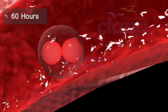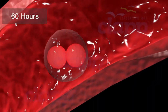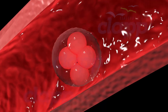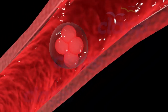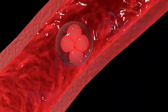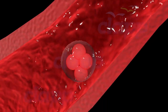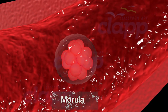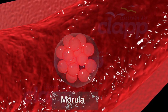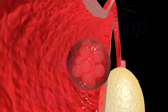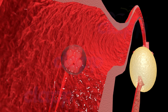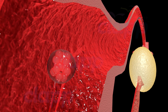Second cleavage is completed after 60 hours of fertilization. On the third day of fertilization, the embryo reaches a count of 16 cells. The structure looks like a mulberry and is called morula. It is still surrounded by the zona pellucida and reaches the uterus around 4 to 6 days after fertilization.